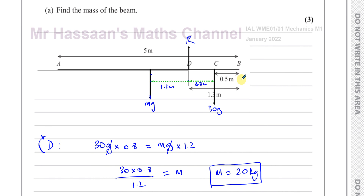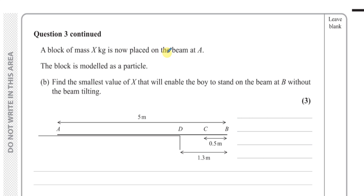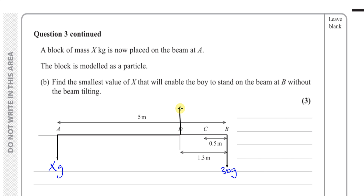That's the answer to part A — 20 kilograms. Now for part B: a block of mass x kilograms is placed on the beam at A, so there is now a force of xg newtons acting at A. The block is modelled as a particle. Find the smallest value of x that will enable the boy to stand on the beam at B without the beam tilting.